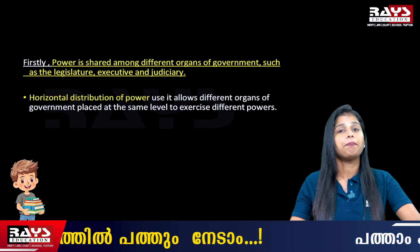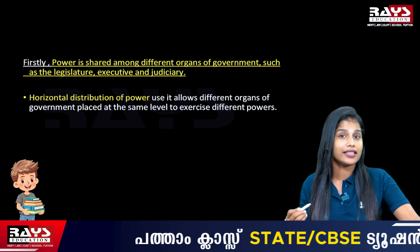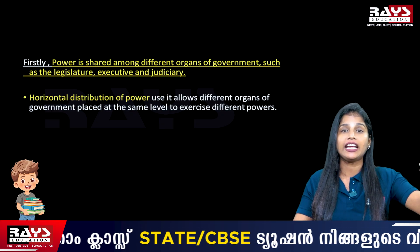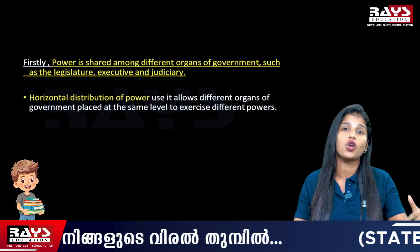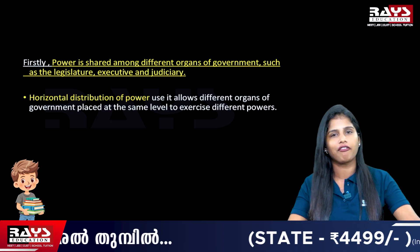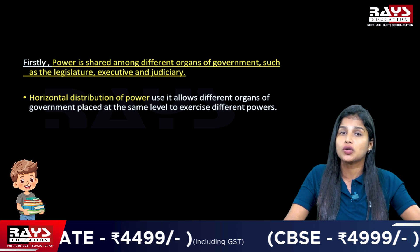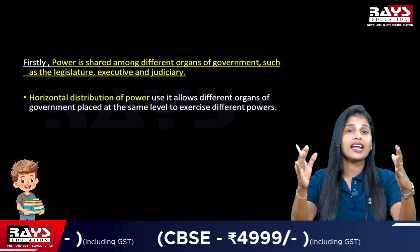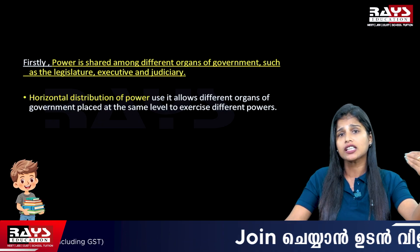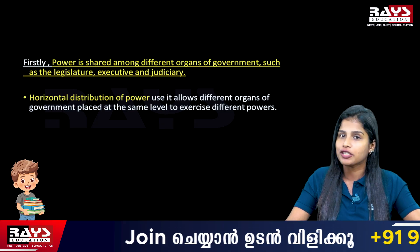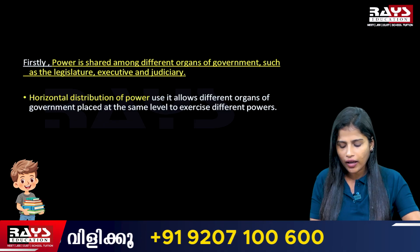The first form is that power is shared among different organs of government, such as the legislature, executive, and judiciary. The power is equally shared among these three organs, and this is also known as horizontal distribution of power. It is called horizontal distribution because these three organs are placed at the same level, and none of the organs exercises more power than the others.